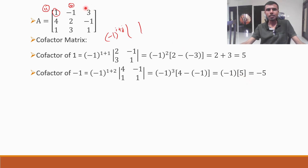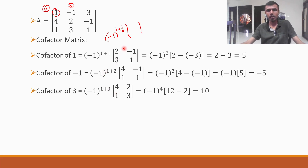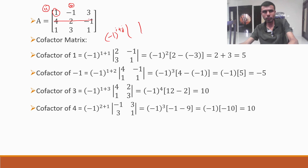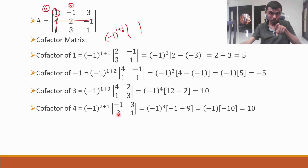For element 3 in first row, third column: minus one to the power 1 plus 3, into det of [4, 2; 1, 3], which is 12 minus 2 equals 10. Minus one to the power even number is plus one, so cofactor is 10. For element 4 in second row, first column — position (2,1): minus one to the power 2 plus 1, into det of [-1, 3; 3, 1], which is minus 1 minus 9 equals minus 10. Minus one to the power 3 is minus one. So minus one into minus 10 gives plus 10.